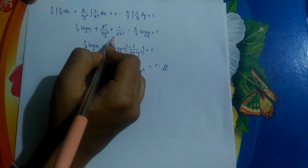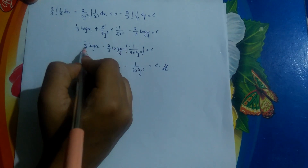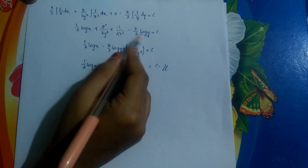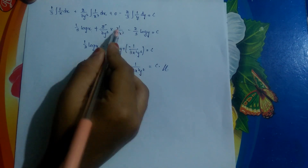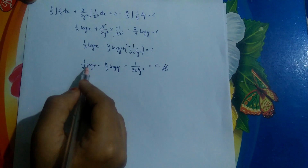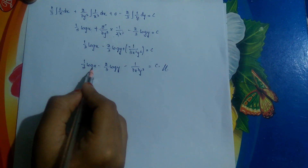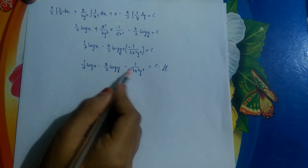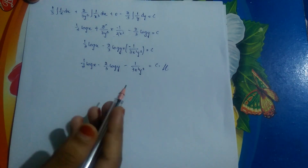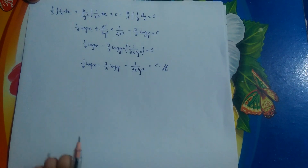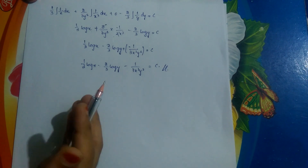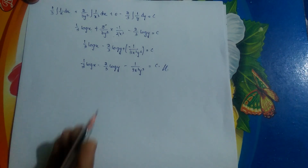After simplification, the general solution is: (1/3) log x - (2/3) log y - 1/(3x²y²) = c. This is the general solution for the given differential equation. We will see two more problems in the next session.